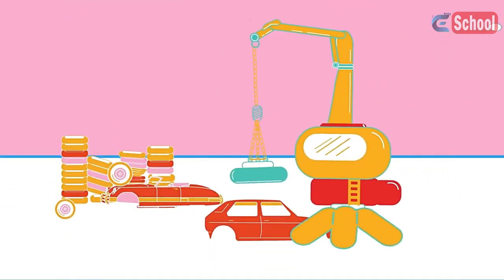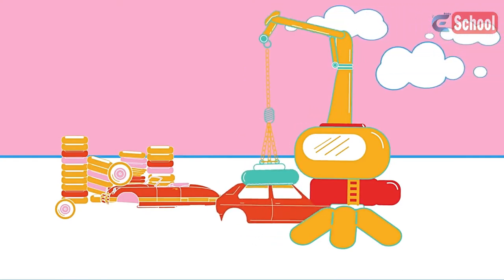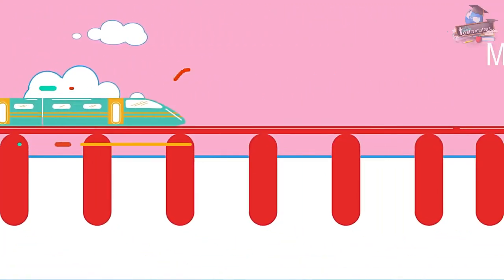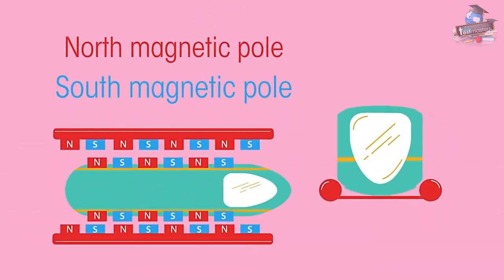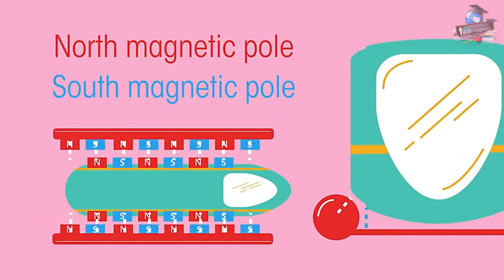Electromagnets have many uses, from moving cars in a scrap yard to high-speed maglev trains. The trains are suspended above the rails by strong electromagnets, reducing friction between the train and the track. And there are many other uses as well.